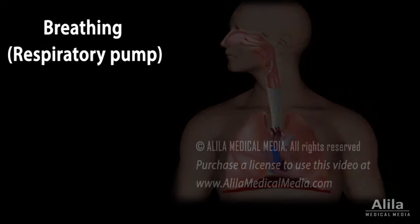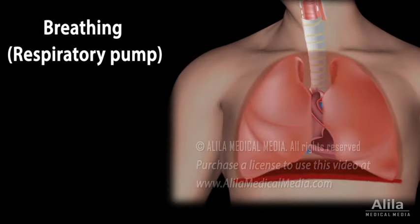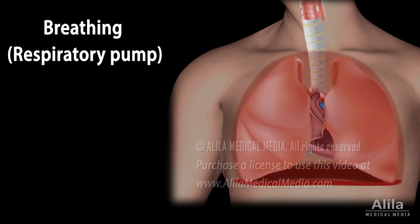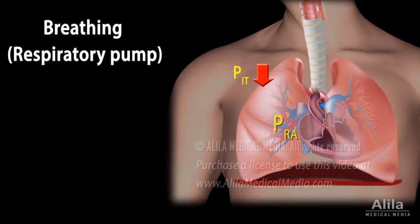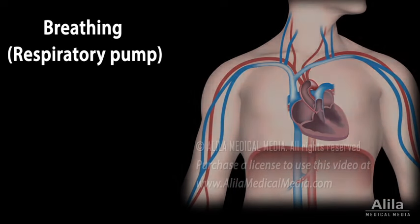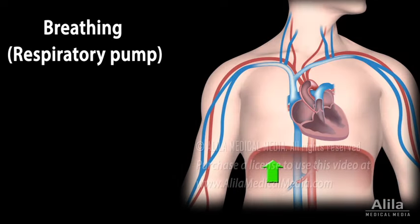Breathing, or respiratory pump: during inspiration, the diaphragm moves down, expanding the thoracic cavity, resulting in a decreased intrathoracic pressure and a subsequent expansion of the lungs. Part of this change in pressure is transmitted across the walls of the heart, lowering right atrial pressure and thus facilitating venous return. At the same time, the descent of the diaphragm also causes an increase in abdominal pressure. As the inferior vena cava passes through both abdominal and thoracic cavities, an increase in abdominal pressure together with a decrease in thoracic pressure squeeze the blood upward toward the heart.